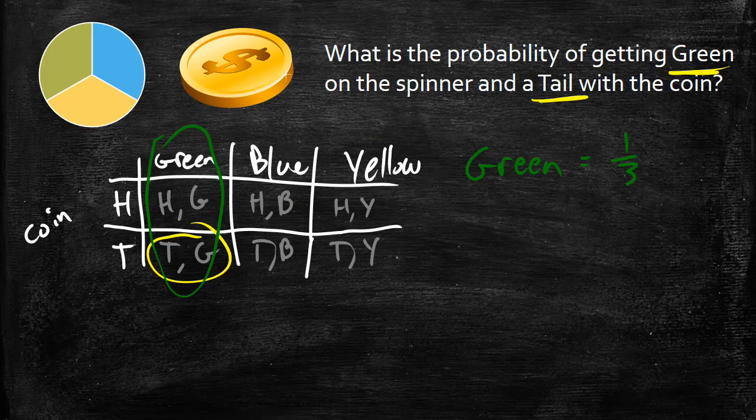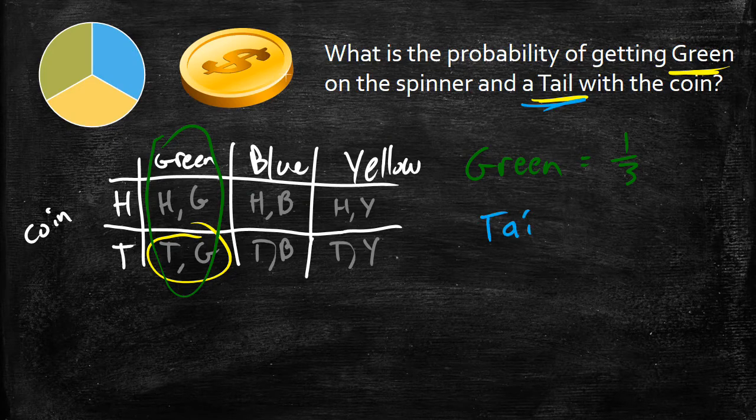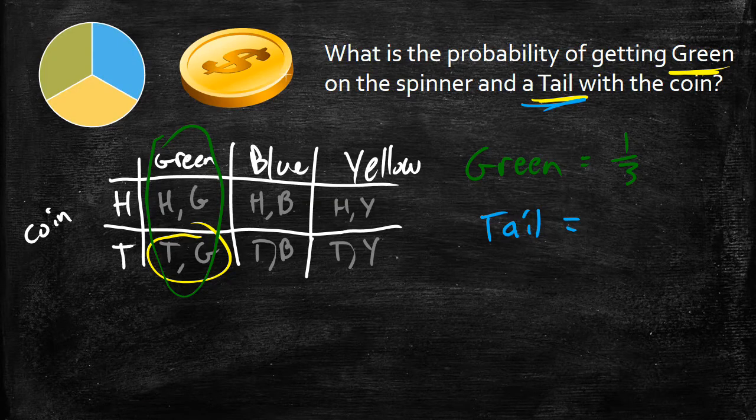All right, and then I can look at my coins. What's the probability of me getting a tail? And I know if I get a tail, there's only two possible outcomes, a heads or a tail. The tail is going to be one half of the options.